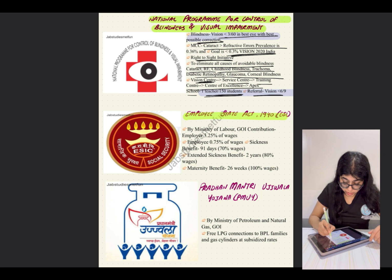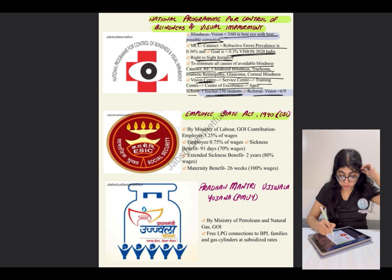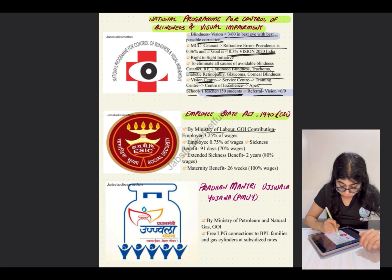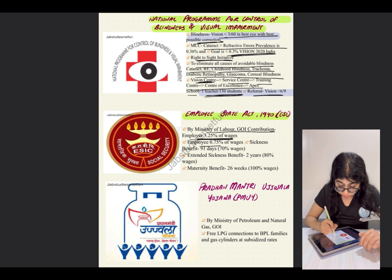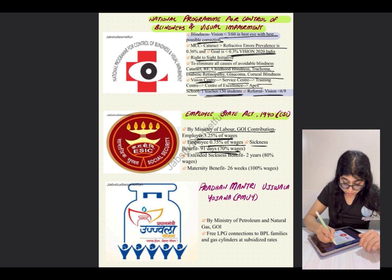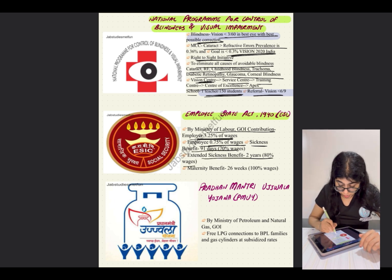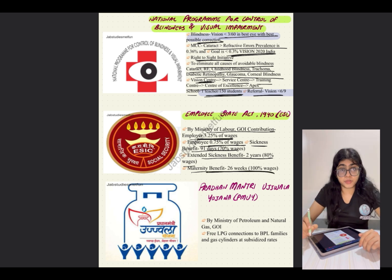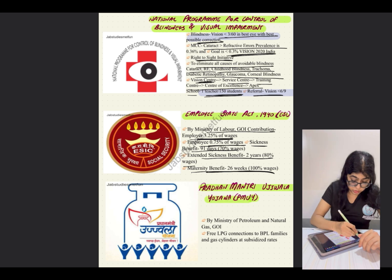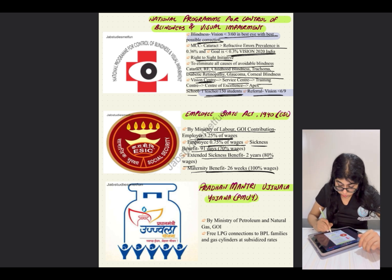The Employee State Insurance Act was given in 1948 by the Ministry of Labor, Government of India. The employer's contribution is 3.25% of wages and the employee's is 0.75% of wages. Sickness benefit is given for 91 days at 70% of wages, extended sickness benefit for two years at 80% of wages, and maternity benefit for 26 weeks at 100% of wages.